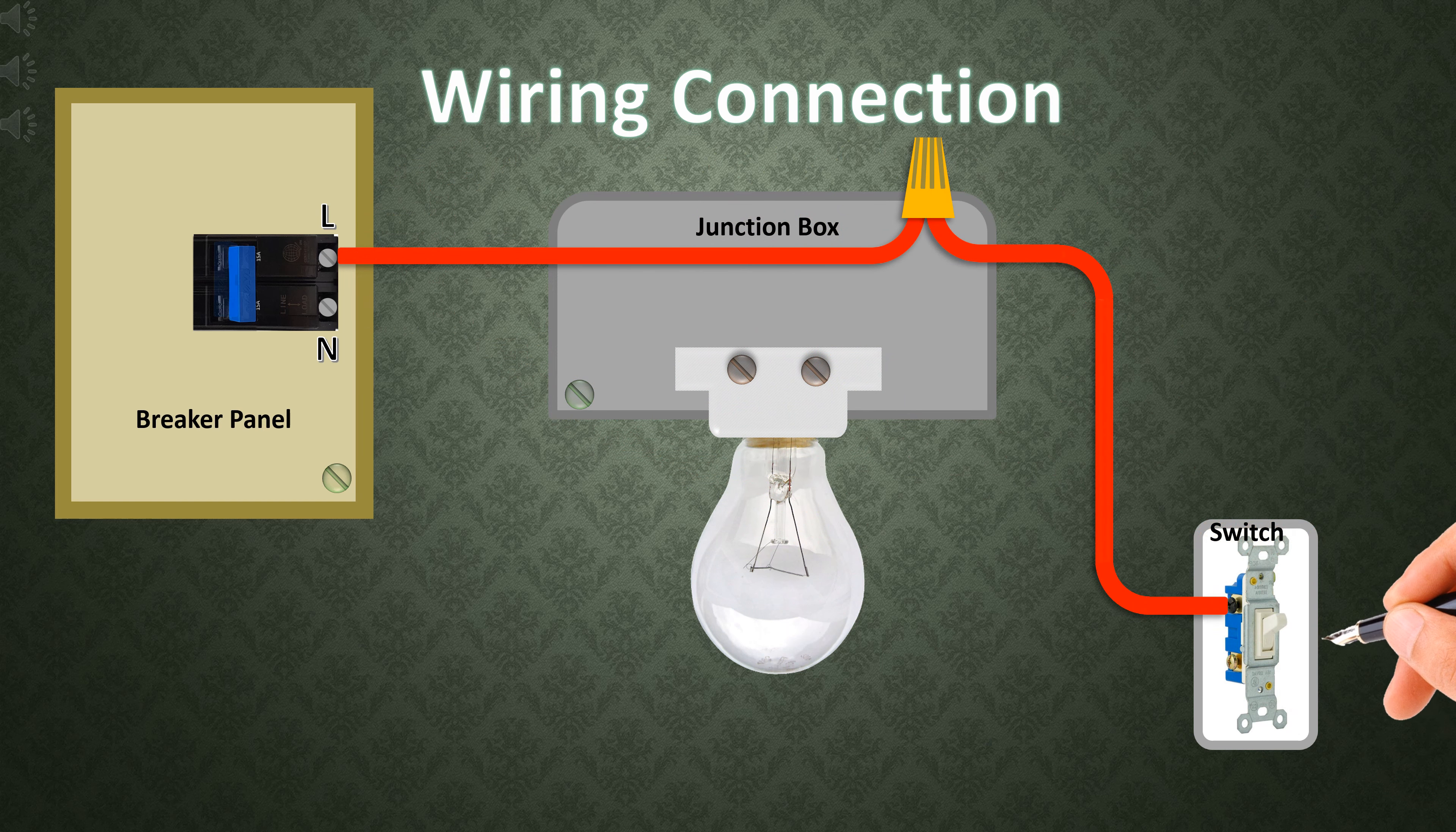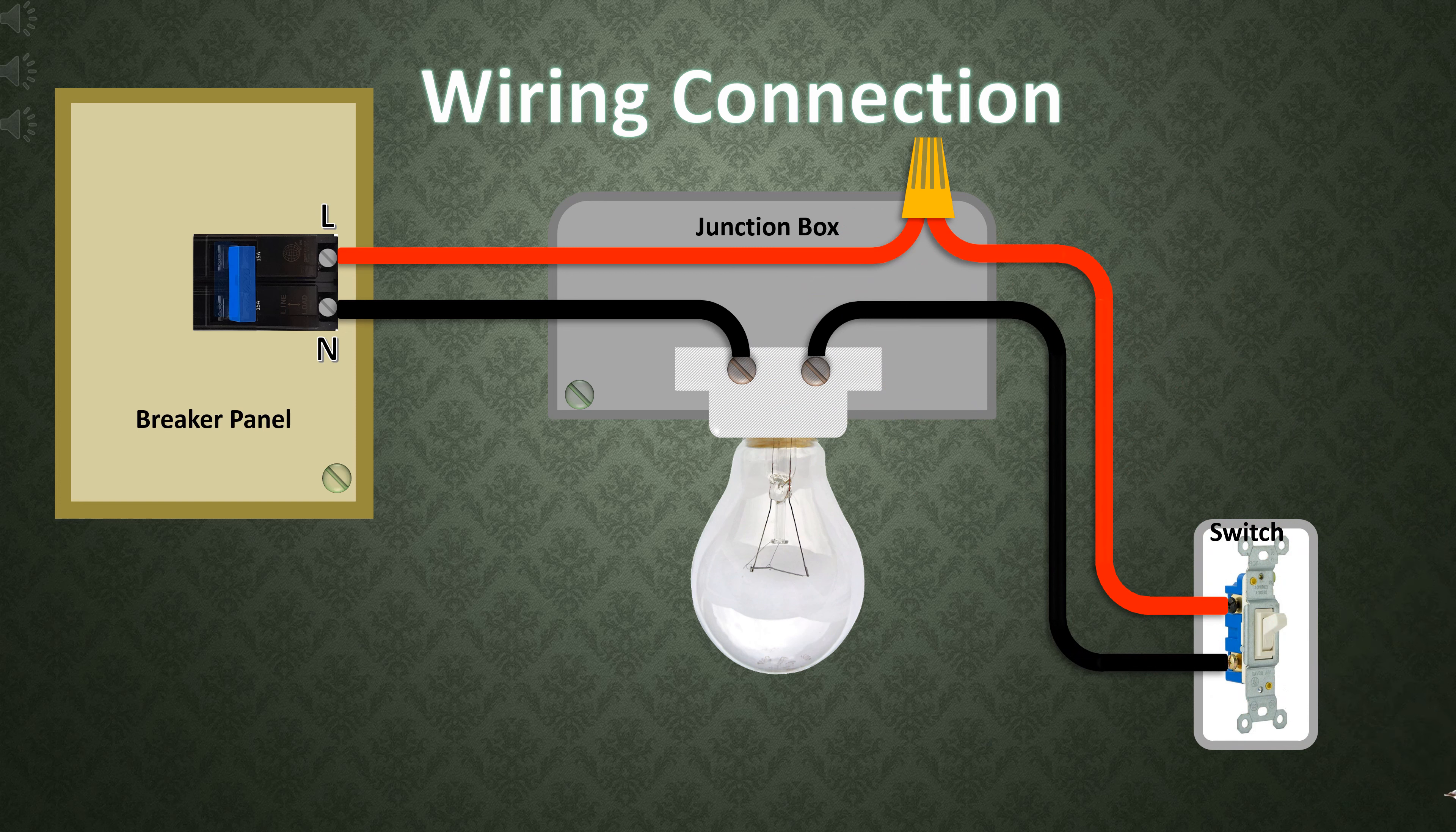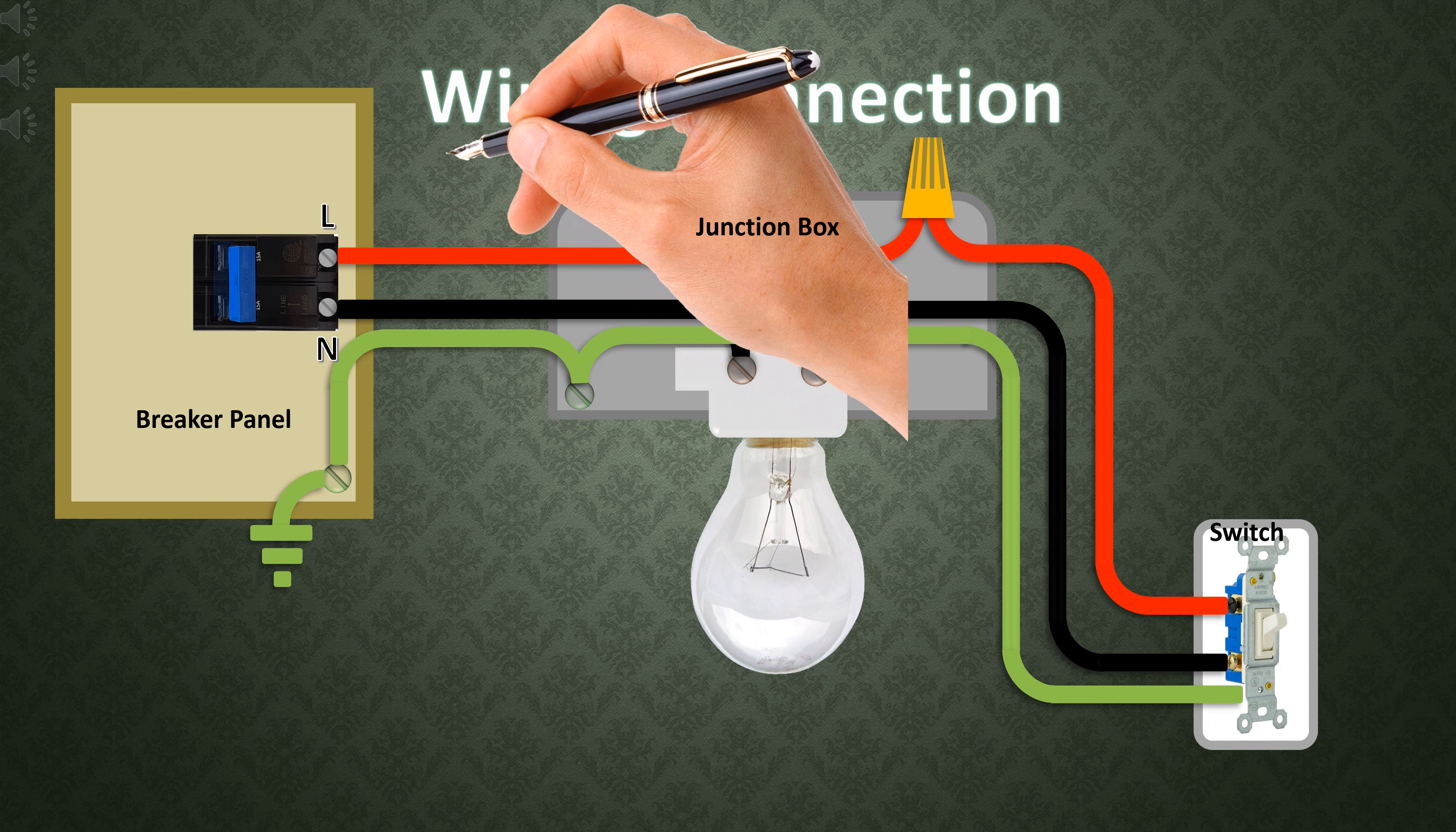Wiring cables: One, red cable from line terminal to junction box to switch. Two, black cable from neutral line of breaker to junction box neutral terminal of bulb. Three, from live terminal of bulb to the second terminal of switch. Four, grounding cable from panel board junction box to utility switch box.